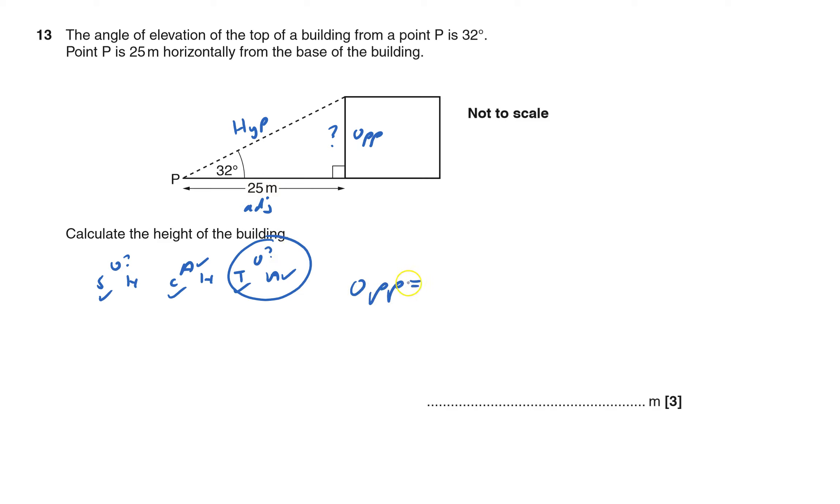So the opposite equals tan - never write down tan just on its own, it's tan 32 - times by the adjacent, because it's on the same level as T, so it's times by 25, which equals 15.62.